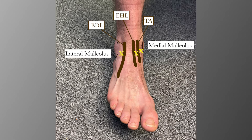For the anterior medial approach, identify the ankle joint space between the talus and the distal tibia, between the tibialis anterior and the extensor hallucis longus. Angle your needle 90 degrees to the skin and plantar flex and invert the foot. For the anterior lateral approach, identify the subtalar joint space. Palpate the distal tip of the lateral malleolus and move about one half inch proximal to that space. Also advance the needle perpendicular to the skin here.